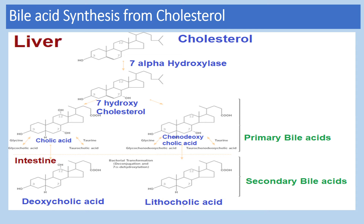The second step is further hydroxylation of 7-alpha hydroxycholesterol. In the presence of the microsomal enzyme 12-alpha hydroxylase, 7-alpha hydroxycholesterol undergoes hydroxylation at the 12th position. Either at the 7th position or subsequently, it will undergo further hydroxylation to form cholic acid and chenodeoxycholic acid.